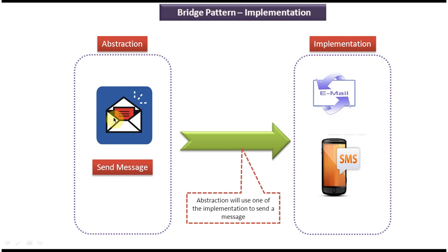On the left side you can see the abstraction. Suppose I want to send a message to a person — I can email the message or I can SMS the message to the corresponding person. So the abstraction will use one of these two implementations to send the message. Later, if I want to add any new implementation in the implementation layer, I can do so without affecting the abstraction layer. This is a best example of the bridge design pattern.